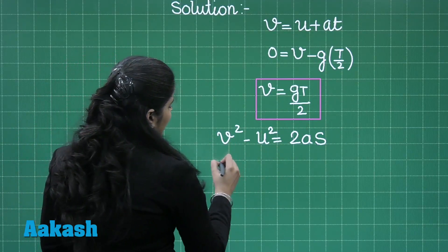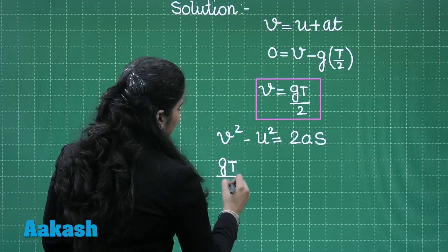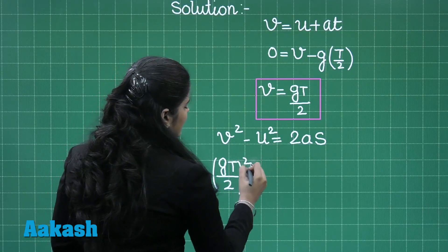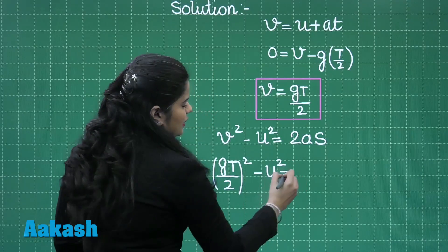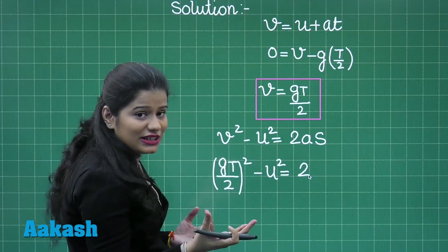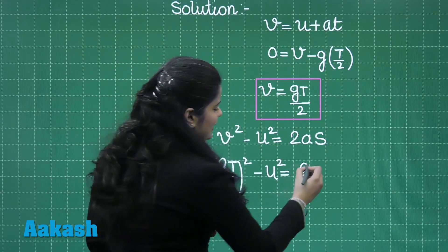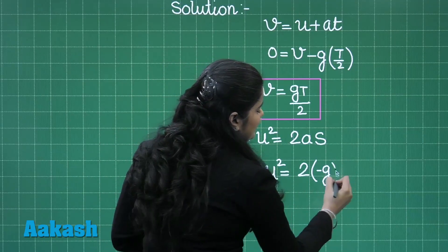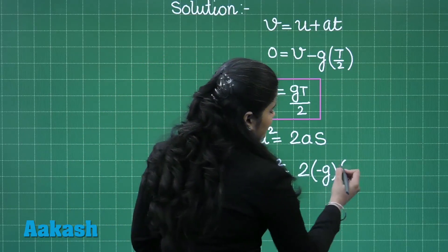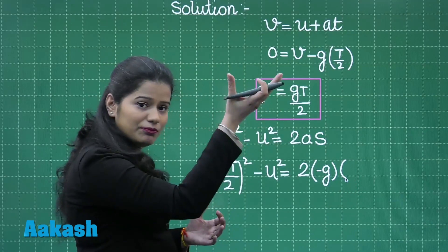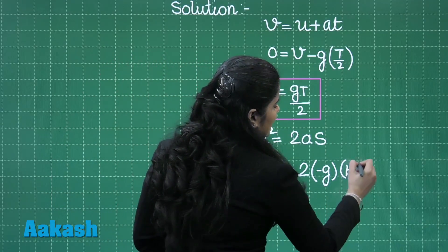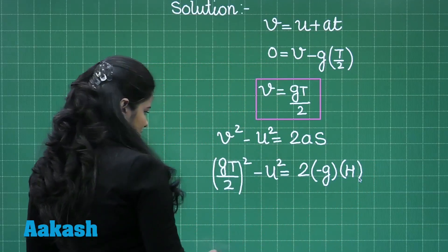So here I can write this will be GT by 2 whole square. U we need to calculate. What is the acceleration due to gravity? It is G and it is acting in the downward direction, so there will be the negative sign with it. H, as the ball is moving in the upward direction, will be positive. That is the displacement of the ball will be positive.